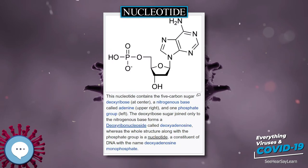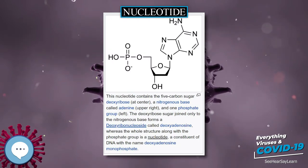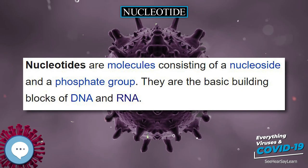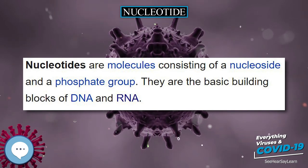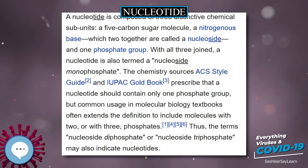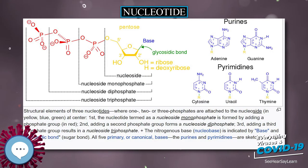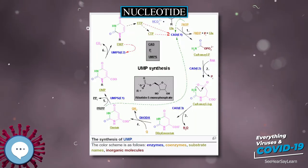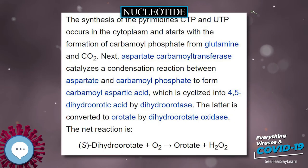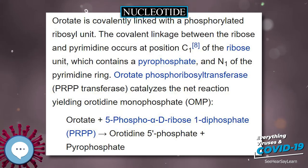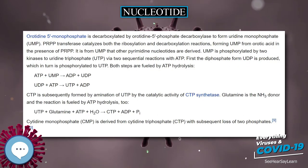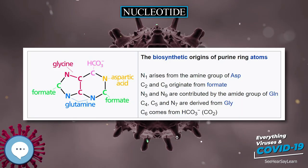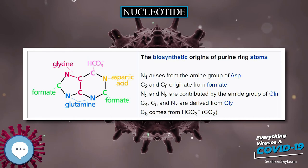Pyrimidine ribonucleotide synthesis: the synthesis of CTP and UTP occurs in the cytoplasm and starts with the formation of carbamoyl phosphate from glutamine and CO2. Next, aspartate carbamoyltransferase catalyzes the condensation reaction between aspartate and carbamoyl phosphate to form carbamoyl aspartic acid, which is cyclized into 4,5-dihydroorotate by dihydroorotase. The latter is converted to orotate by dihydroorotate oxidase.